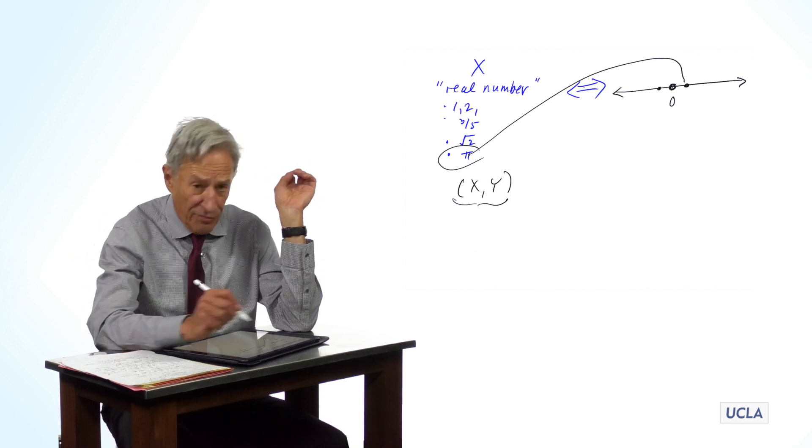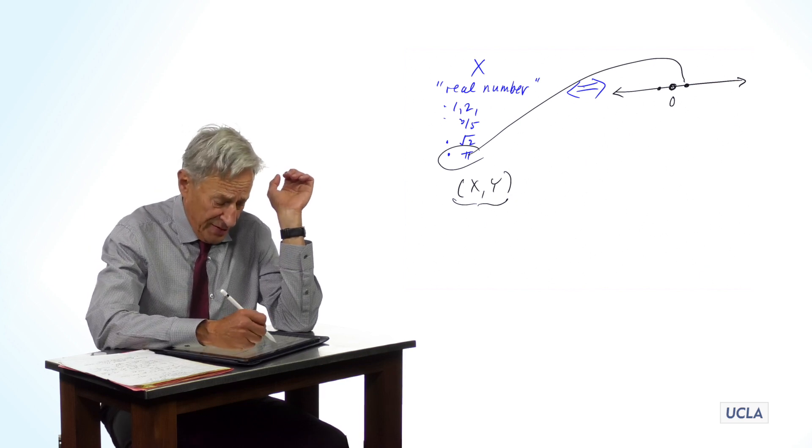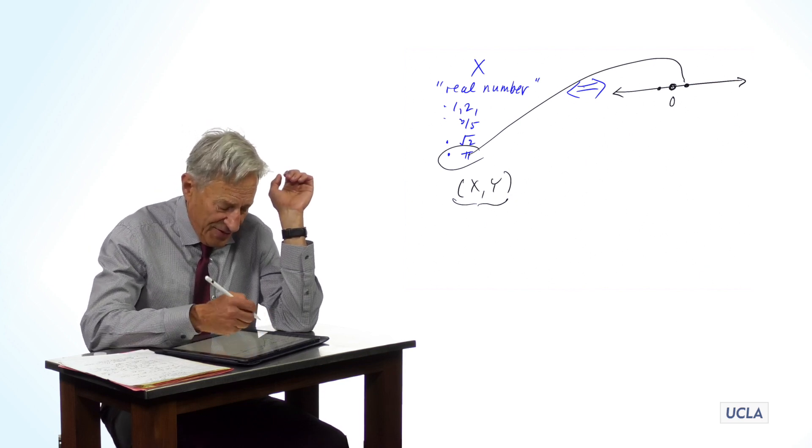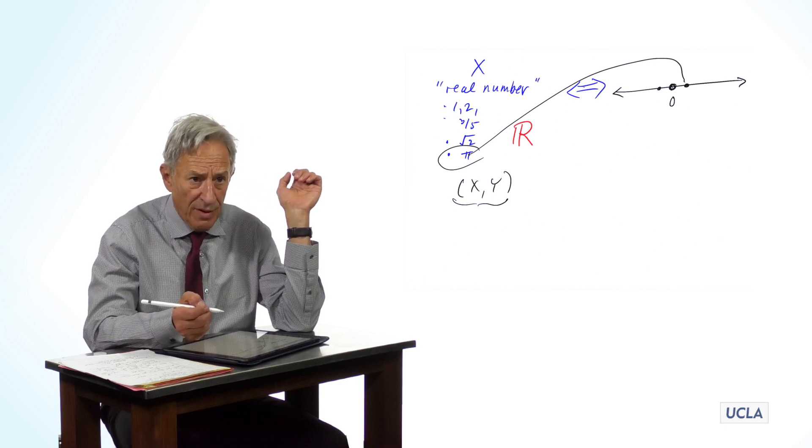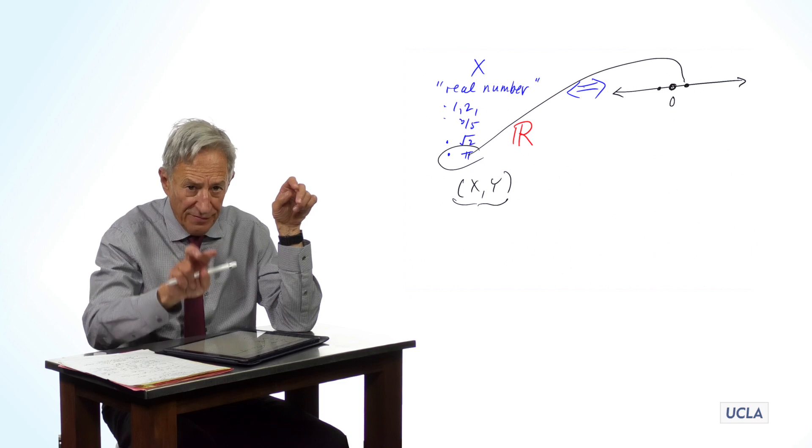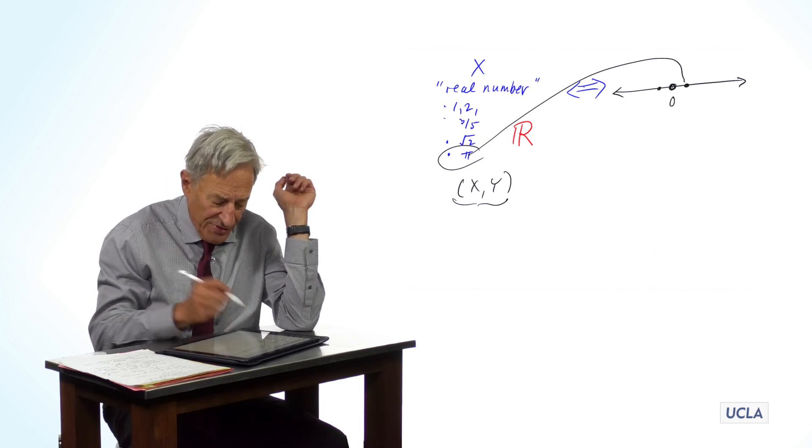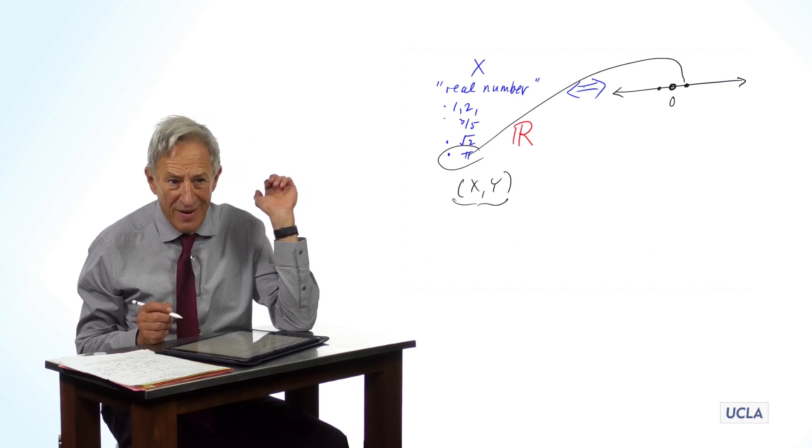The symbol for the real numbers, and you will be seeing this a lot, is an R with that funny double vertical part. This is how you write the real numbers in math.